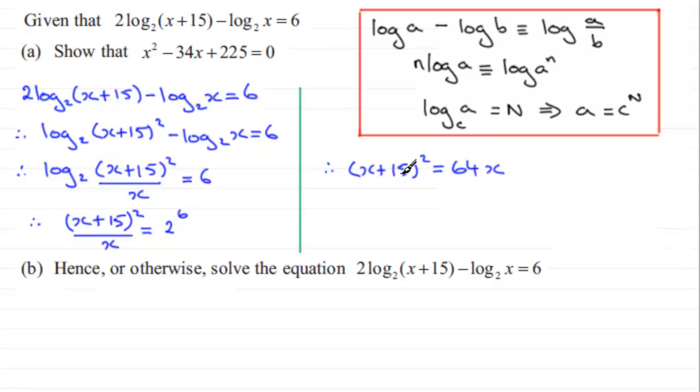And now it's just a question of expanding the brackets here. x plus 15 all squared gives us x squared. Then we'll have 15x and another 15x, which is 30x, and 15 squared is 225, and that equals the 64x. So I've just got to subtract 64x now from both sides, and that gives me x squared plus 30x take away 64x leaves me with minus 34x, and then we've got plus 225, and that equals 0. And that's what we had to show.